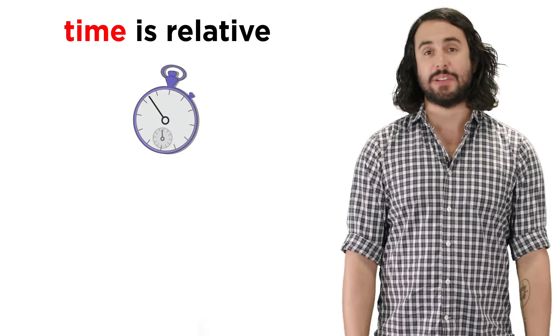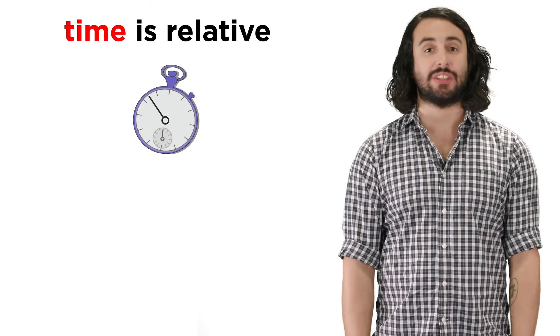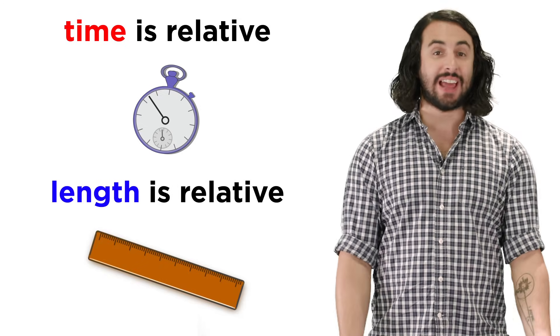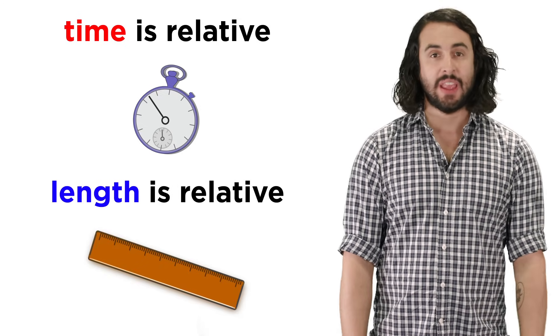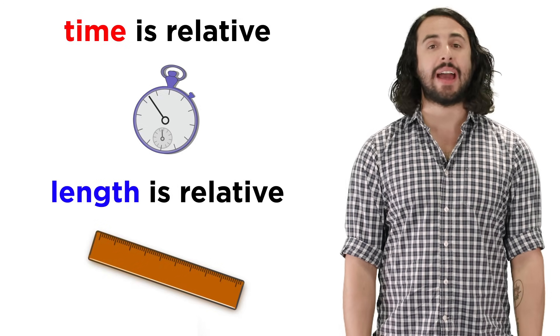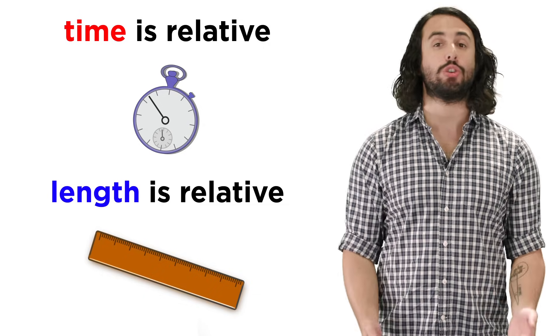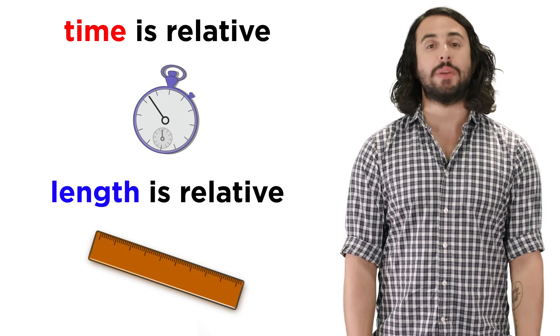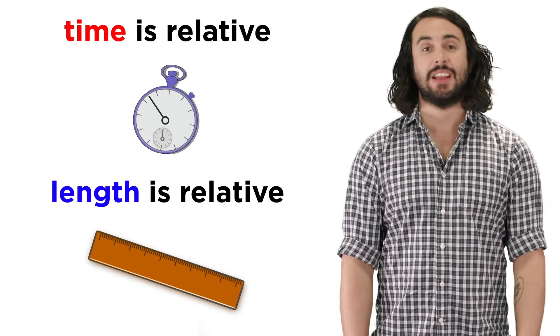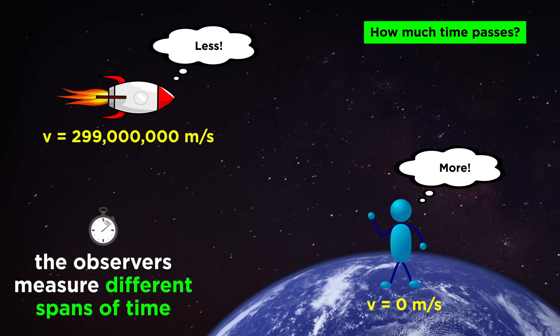As it happens, it's not just time that's relative — it's length as well. And as we will find out, the math tells us that when you approach the speed of light, your measurement of space changes just like time.